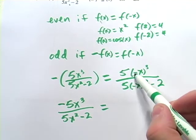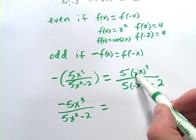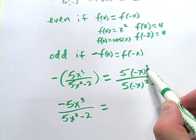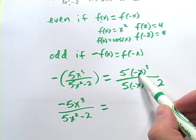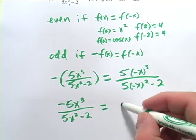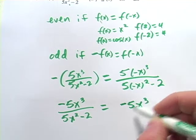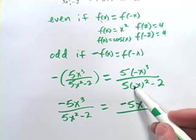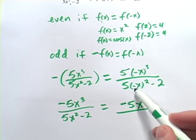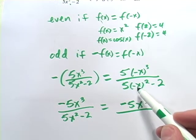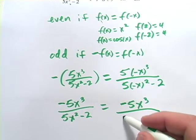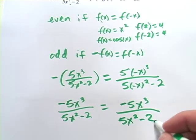And here, negative x cubed, when a negative sign is raised to an odd power, you keep the negative sign. So that's 5 times a negative x cubed or negative 5x cubed. And then down here, a negative sign raised to an even power becomes a positive sign. A negative times a negative is a positive. So this becomes 5x squared, and then we have our minus 2.